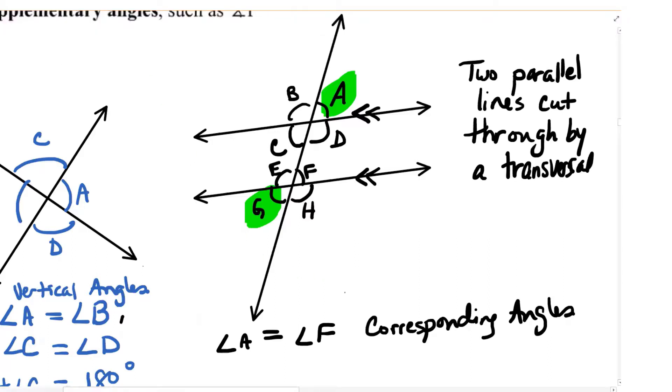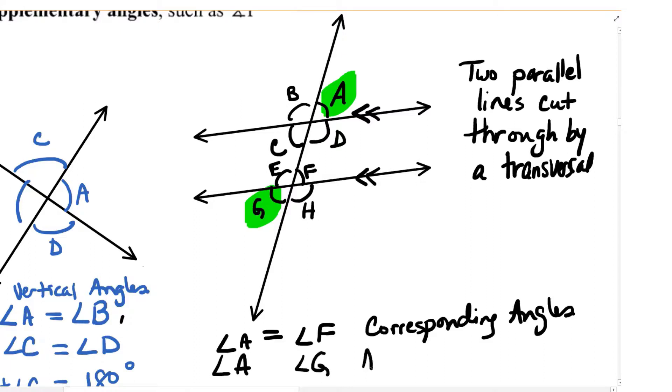Does anyone remember what that's called from the videos? Angle A and angle G are called alternate because they're on opposite sides of the transversal. Good. Exterior because they're on the outside of the parallel lines. Angles.